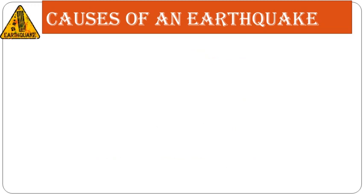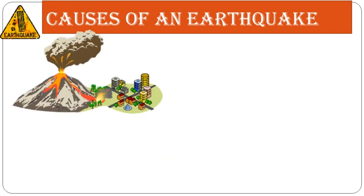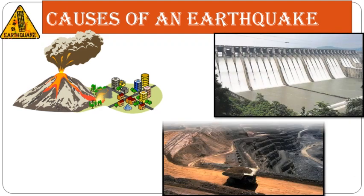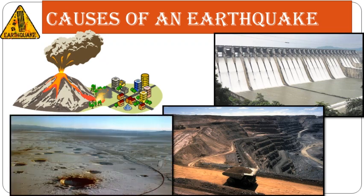Now let's learn about the causes of an earthquake one by one. The first causes include volcanic eruption, stress of big dams on the earth, mining, and underground atomic tests. Due to dams, a lot of pressure is created on the earth's surface, and due to all these factors, pressure is created on the earth's surface, which can cause an earthquake.